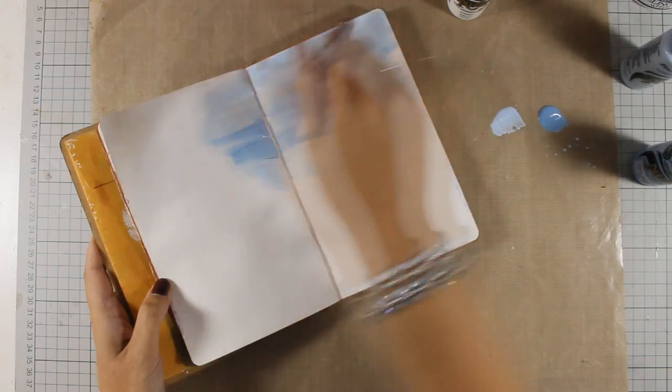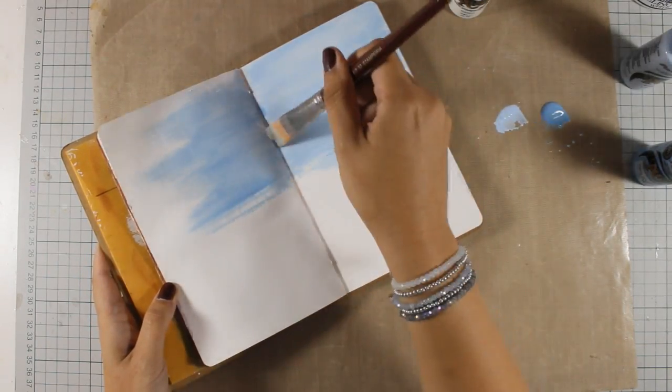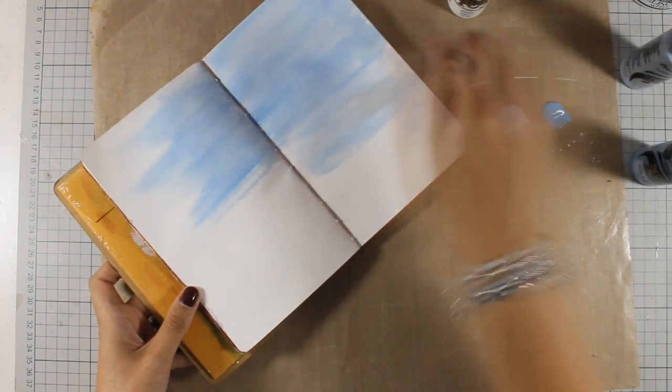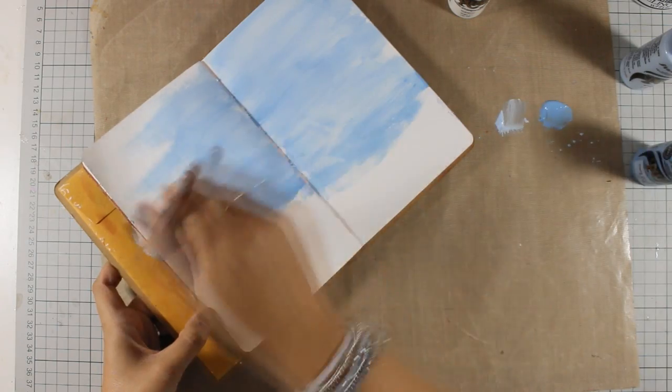Sometimes I dip on the darker shade and other times I dip my brush on the lighter shade. I don't want to totally blend those two colors and I like those strokes on my pages. The idea is to create a kind of a sky for my background.